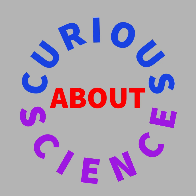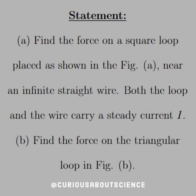All right, let's get this magnetic force party started. The statement reads: for part A, find the force on a square loop placed as shown in figure A, near an infinite straight wire. Both the loop and the wire carry a steady current I.